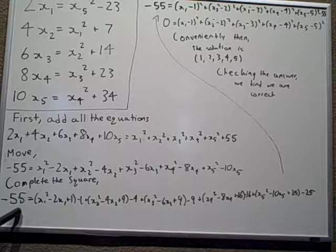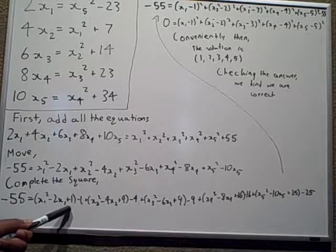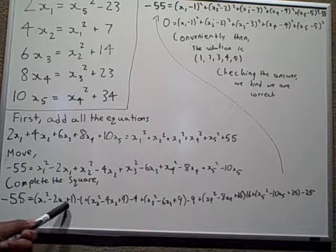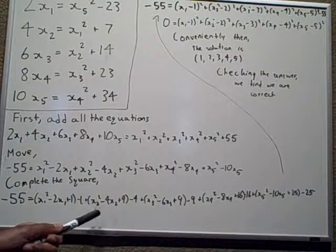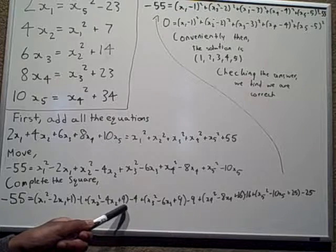So you have squares here. Negative 55 equals x1 squared minus 2x1 plus 1 minus 1. And the same with all the other ones: x2 squared minus 4x2 plus 4 minus 4,